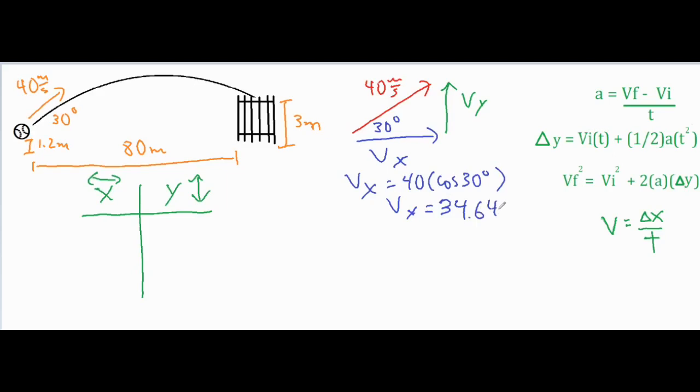That's going to give us 34.64 meters per second. In the Y direction, we're going to use the side opposite of our 30 degree angle, so we're going to take 40 times the sine of 30 degrees. Our Y component of that 40 meters per second is going to be 20 meters per second.